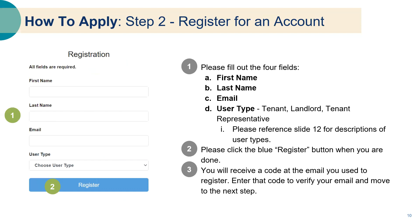Step two: register for an account. Please fill out the four fields — first name, last name, email, and user type: either tenant, landlord, or tenant representative. Please click the blue register button when you are done and you will receive a code at the email address you used to register. Enter that code to verify your email address and move to the next step.